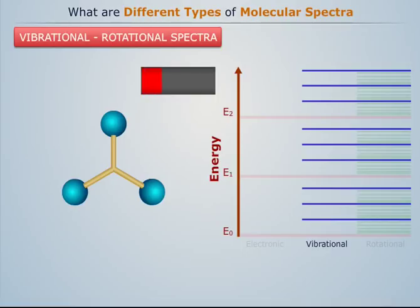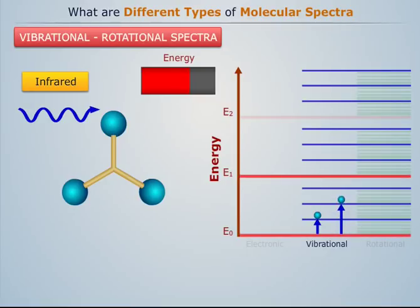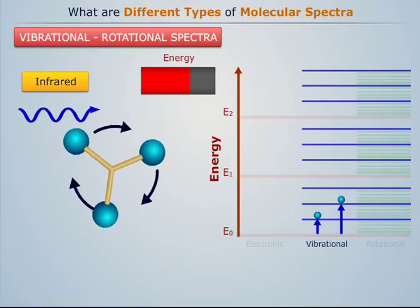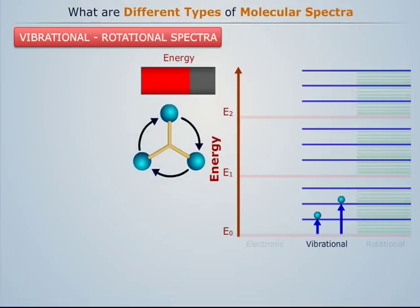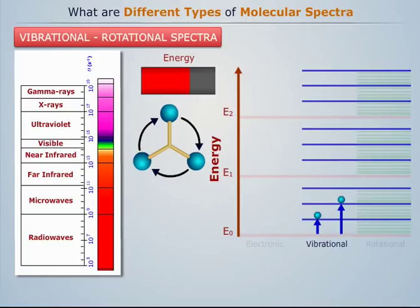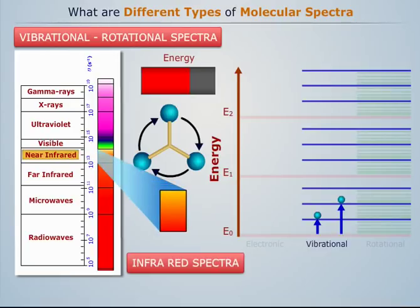If the exciting energy of the radiation is large enough to cause a transition from one vibrational level to another within the same electronic level, then both rotational and vibrational transitions take place, and thus a vibrational-rotational spectra is obtained. Vibrational-rotational spectra is observed in the near infrared spectral region and is also known as infrared spectra.